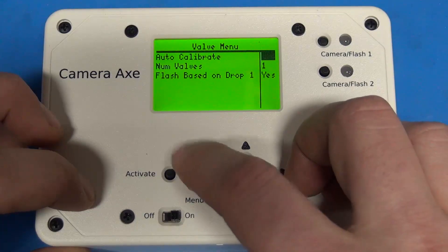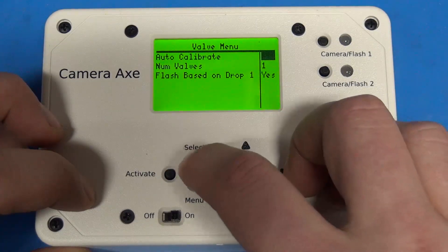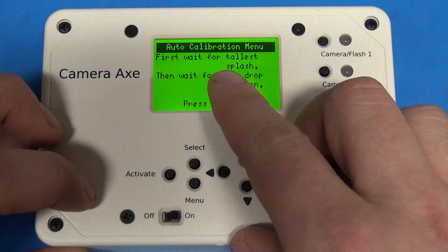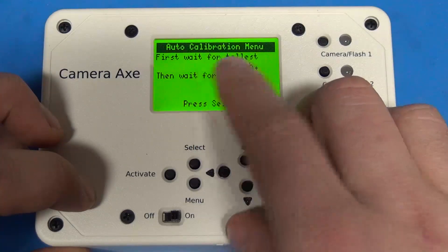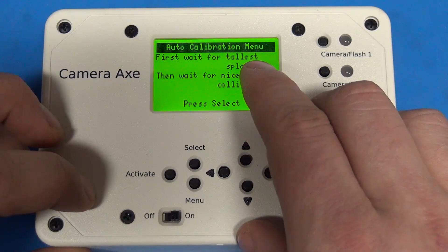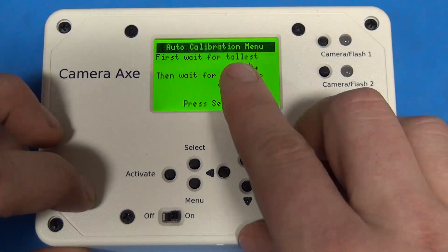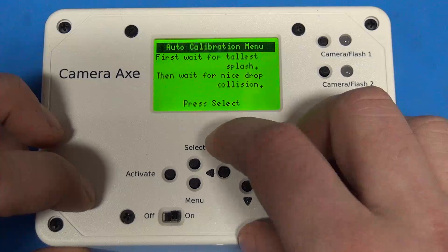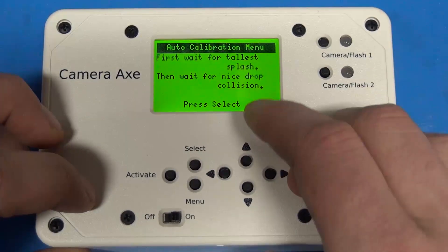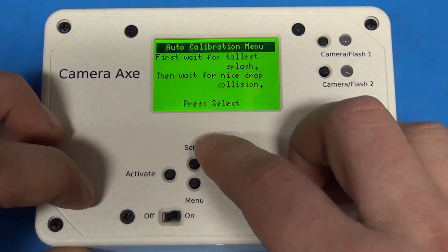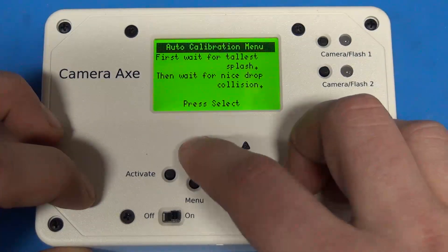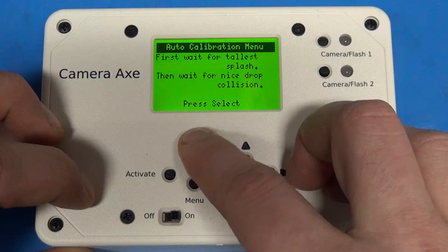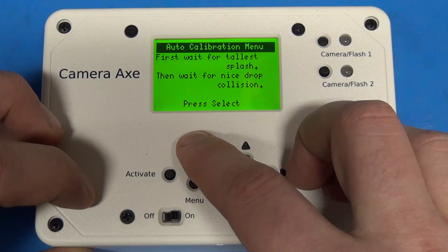Now let me go into the auto calibrate. All you do is you turn on this mode by hitting the select button. And it takes you into a submenu, where it tells you that first off, you're going to be waiting for the tallest splash you can get from a droplet, and then you'll hit the select button again. Then you wait for a nice drop collision, and then you'll hit the select button again, and then all of the settings will be saved off to the standard valve menu. And you will be ready to go, and you should be able to reproduce that colliding drop photo that you had just taken in this menu.